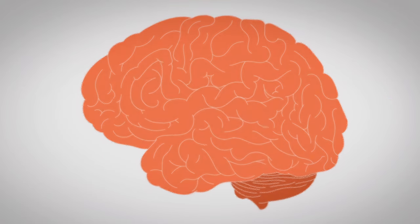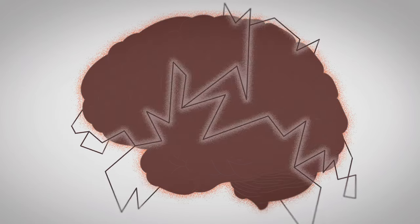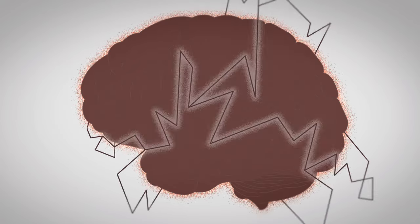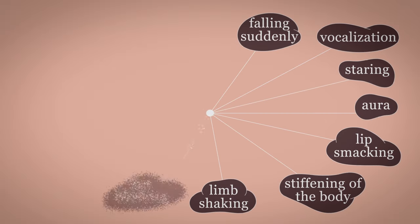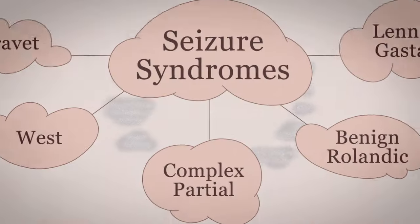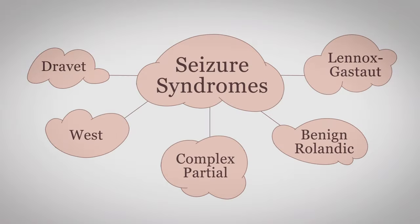Doctors define a seizure as any set of symptoms resulting from excess electrical activity in the brain. Outside this shared feature, there is a massive range of seizure symptoms, and researchers have identified a variety of different seizure types. But regardless of the underlying conditions that cause them, every seizure begins here.